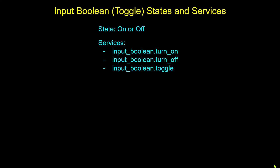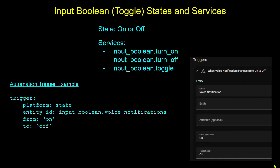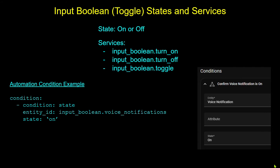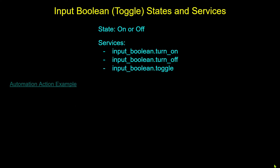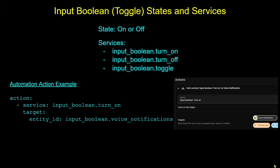In terms of a trigger, you can look at the state of the input boolean when it switches from off to on or on to off, and that can be your automation trigger. In terms of conditions — which is how I normally use input booleans — we can look at the state of our particular input boolean and see whether it is off or on. Of course we can also use these in our action part of automations by calling one of those services: turn on, turn off, or toggle.